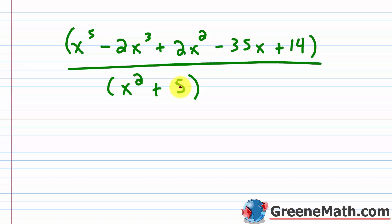So what I want to do here is give a solution for quiz question number five when dividing polynomials. We have x to the fifth power minus 2x cubed plus 2x squared minus 35x plus 14, divided by x squared plus 5.